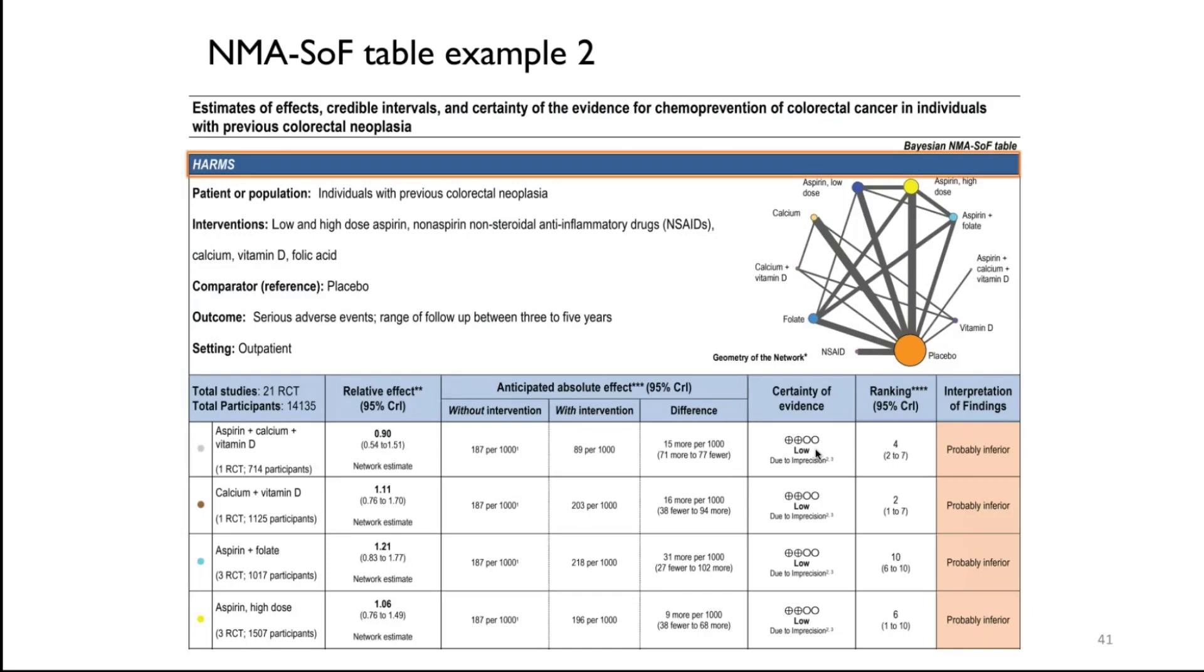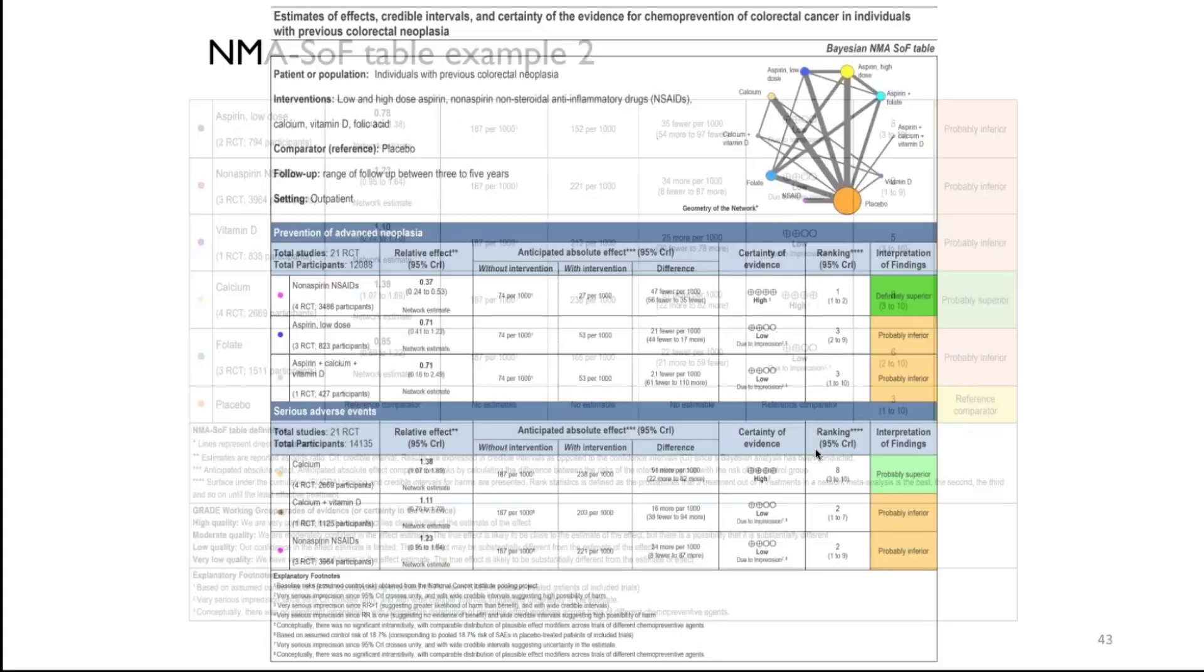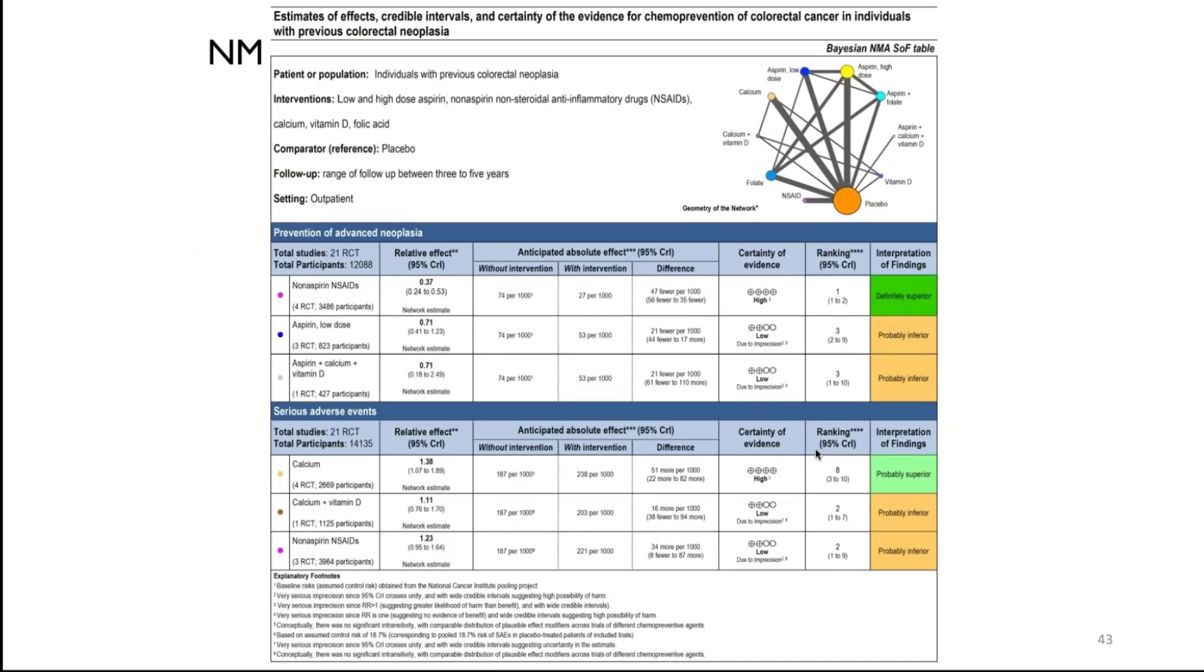Then the same thing would be done. This is to emphasize that the summary of findings tables in this approach would require one summary of findings table per outcome, which obviously increases complexity of showing the information, but at the same time doing it this way increases transparency. This would be describing the harms, same type of idea. At the end of the day, by presenting separate summary of findings tables for the benefits and the harms, interpretation is actually quite difficult, as you can imagine, because interpreters would have to pull information together from different summary of findings tables, and we believe that that probably makes things quite difficult.